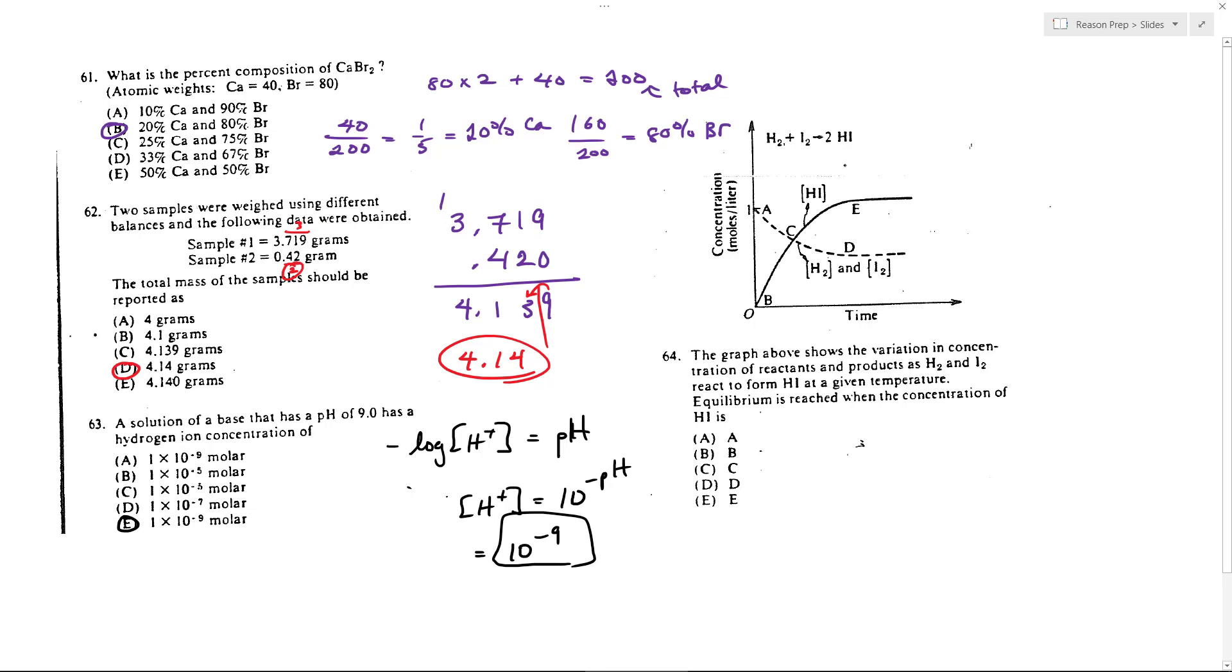And where you're looking for equilibrium is when the amounts of them, the concentrations, become constant. They no longer change because you have as much H2 and I2 turning into HI as you have HI turning back into H2 and I2. This is the chemical reaction in play. And so at equilibrium, you're going to have as much HI going back into reactants as reactants to the product. So the relative amounts of these guys, their concentrations will be constant. And that happens where the lines go flat. So where does HI reach its equilibrium concentration? Well, that'll be at E because that's when it's flat.